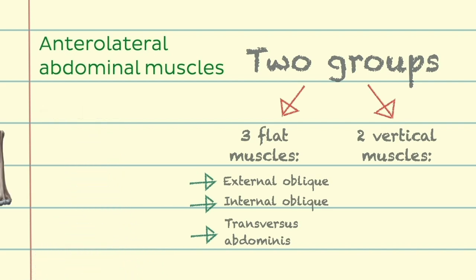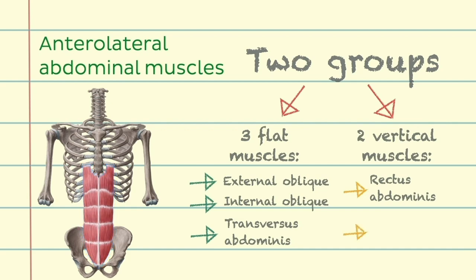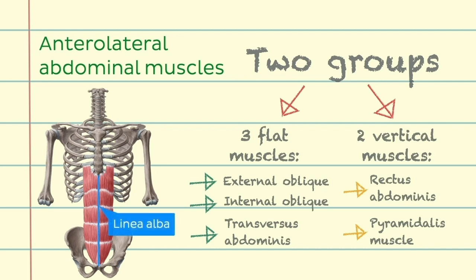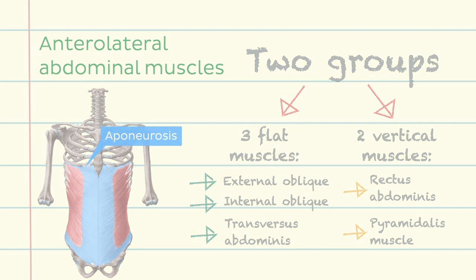The two vertical muscles are the rectus abdominis — better known as the abs muscle — and the small pyramidalis muscle. These muscles are enveloped by the rectus sheath and are related to the linea alba. Both of these structures are formed by the aponeurosis of the flat muscles of the anterolateral abdominal wall.